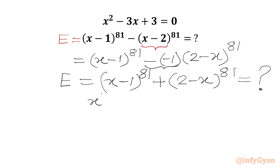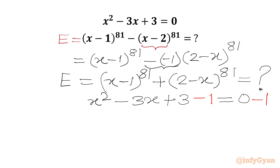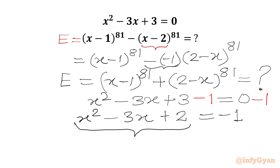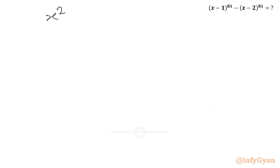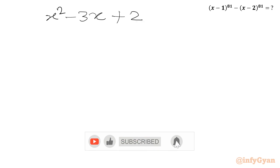Now I will write our quadratic equation x² - 3x + 3 = 0. I will subtract 1 from both sides, so our equation becomes x² - 3x + 2 = -1. This is the equation we will work with, and our required expression remains (x-1)^81 + (2-x)^81.